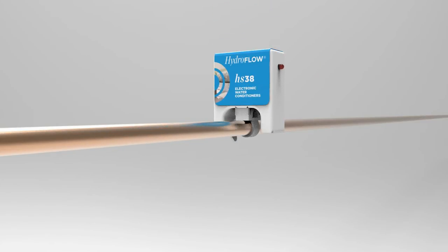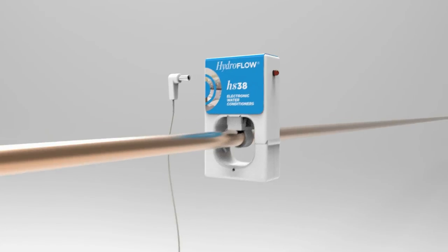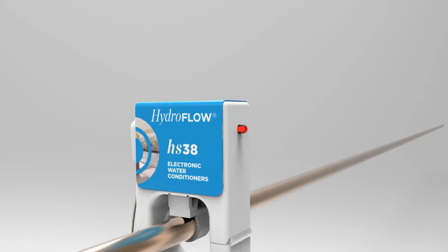The HS38 simply clips around the existing pipe without requiring any plumbing or cutting of pipes. It runs off a standard power supply and uses around £1 worth of electricity per year.